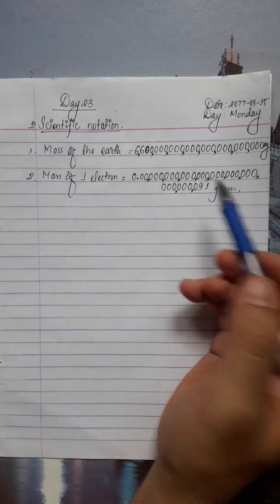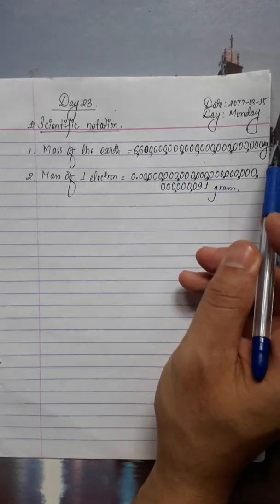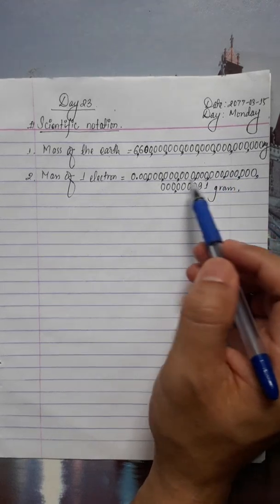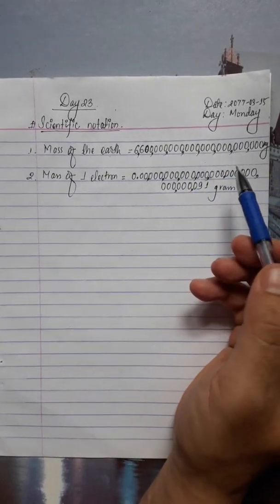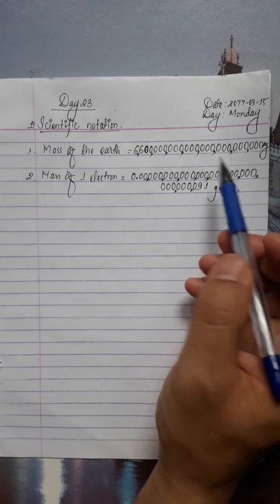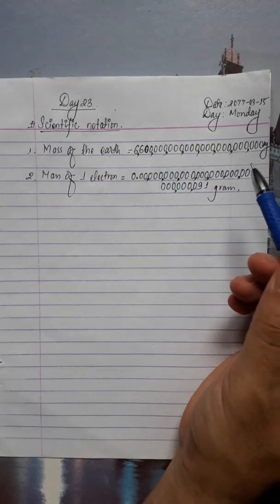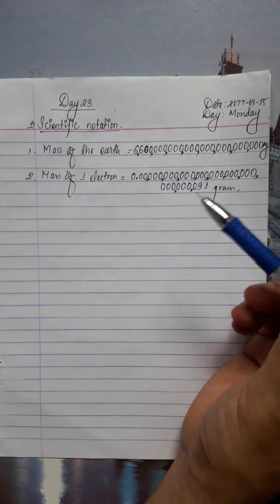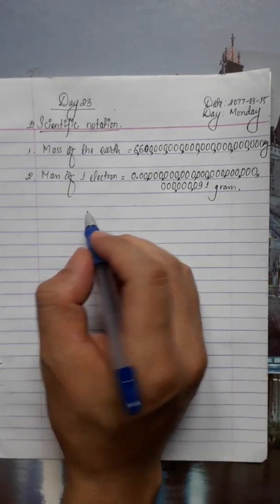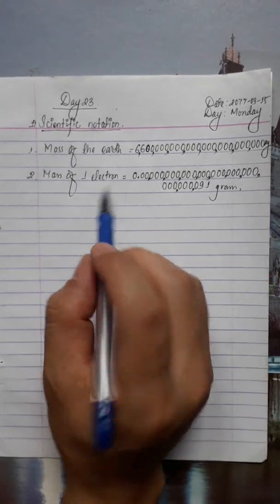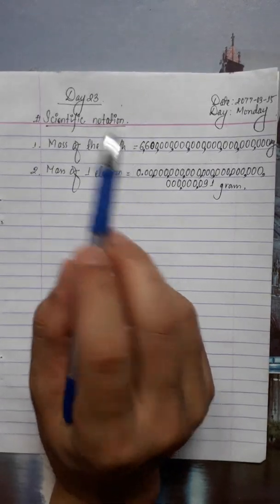What is the mass of the Earth in grams? What is the mass of one electron? Numbers like these have many zeros. Scientific notation is a short form to write such numbers — a process that avoids the headache of writing long decimal numbers.